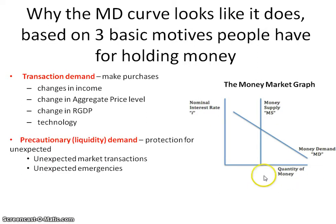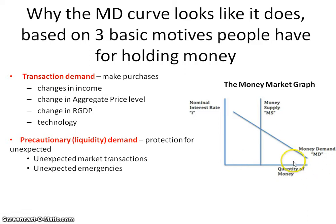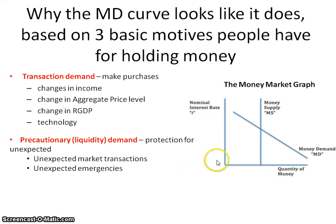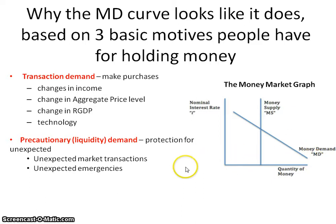Another reason is the precautionary or liquidity demand. This is basically protection for the unexpected. Unexpected things come up, and so people need to have money to pay for those things. It could be unexpected transactions that people want to make in the market, or it could be emergencies and things that people hadn't accounted for before, but you still have that money on hand so that you're able to handle them.